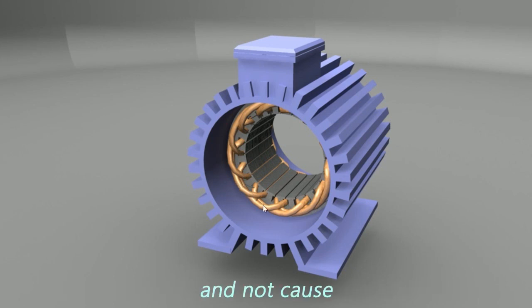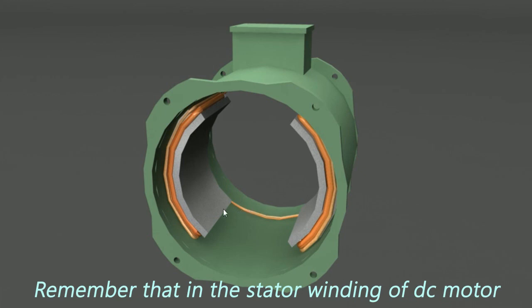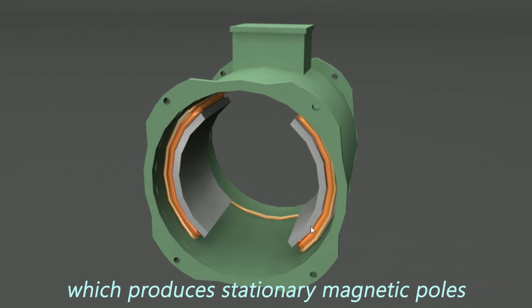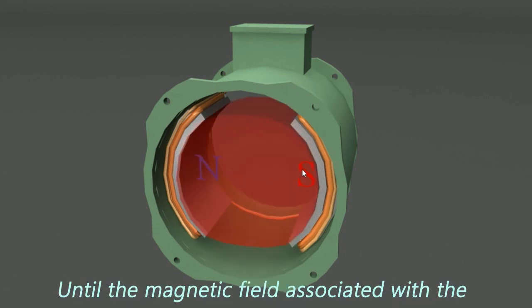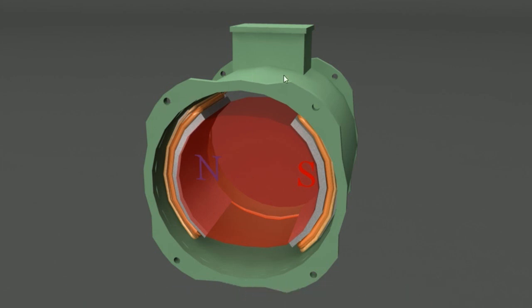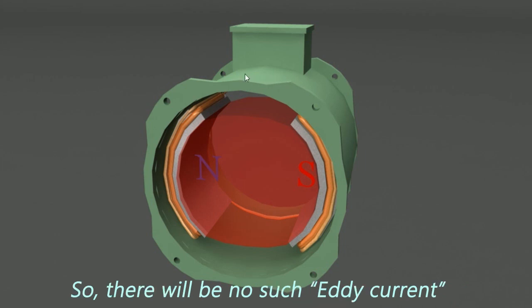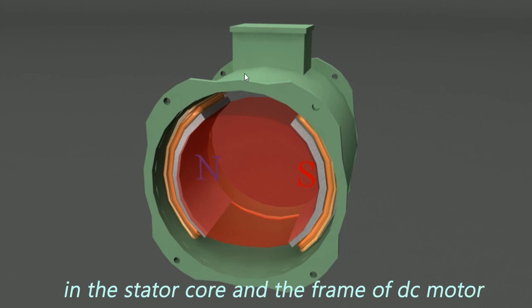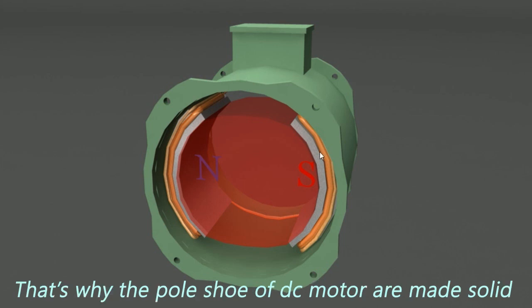Remember that in the stator winding of DC motor, we give direct current, which produces stationary magnetic poles. Until the magnetic field associate with the stator core and the frame does not change, no EMF can be induced in them. So there will be no such eddy current. And hence, no such production of heat in the stator core and the frame of DC motor.